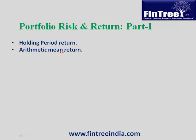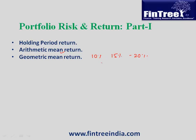Next is arithmetic mean return, which is nothing but the arithmetical average of returns earned on different stocks. Next is geometric mean. Let's say you earned returns of 10%, 15%, and minus 20% over a period of three years. The geometric mean of these numbers would be 1.1 × 1.15 × 0.80.